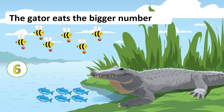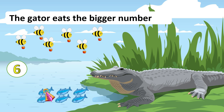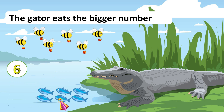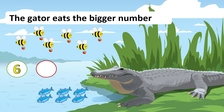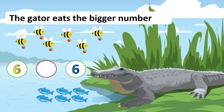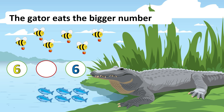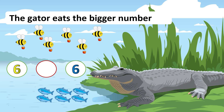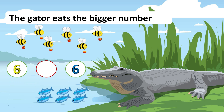How about the fish? One, two, three, four, five, six. Look! Their numbers are the same. The number of bees is six and the number of fish is also six.